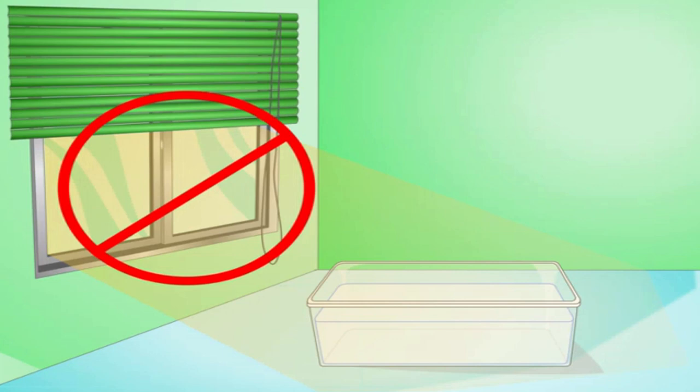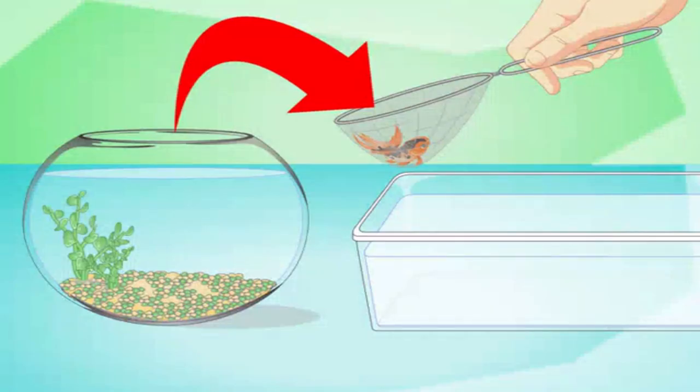Move your fish. Take your fishnet and scoop your fish out of the fish bowl and put them into the temporary holding tank of fresh water. Use a large bowl for this holding tank so that your fish have plenty of room to swim. When using a fishnet to transfer fish from one container to another, make sure the containers are close together. This will reduce the amount of time the fish is out of the water, thus reducing its stress levels.